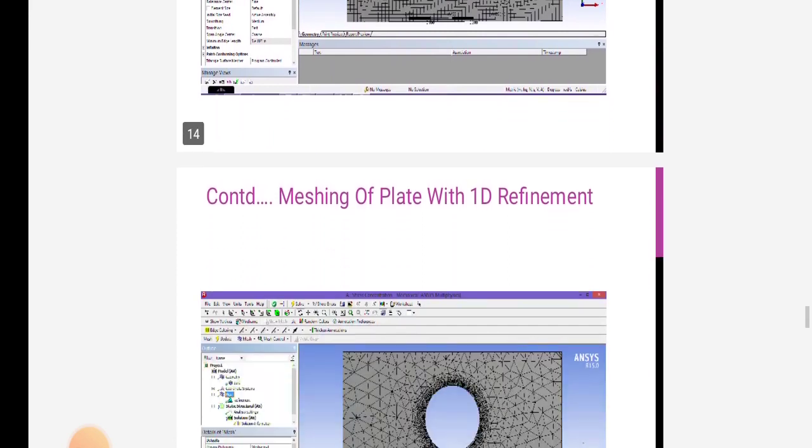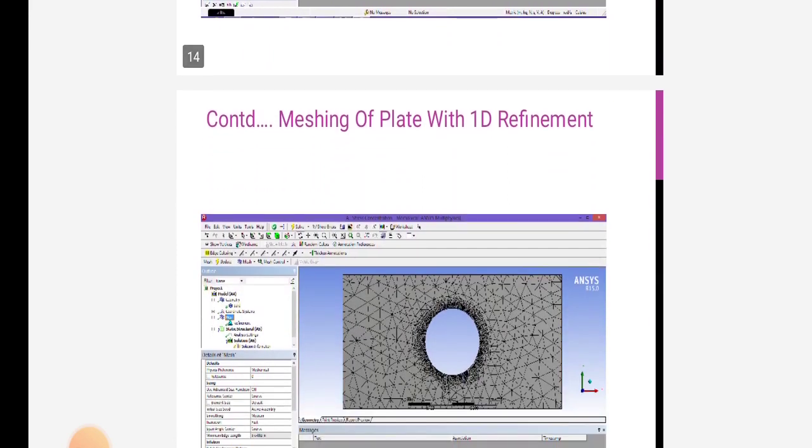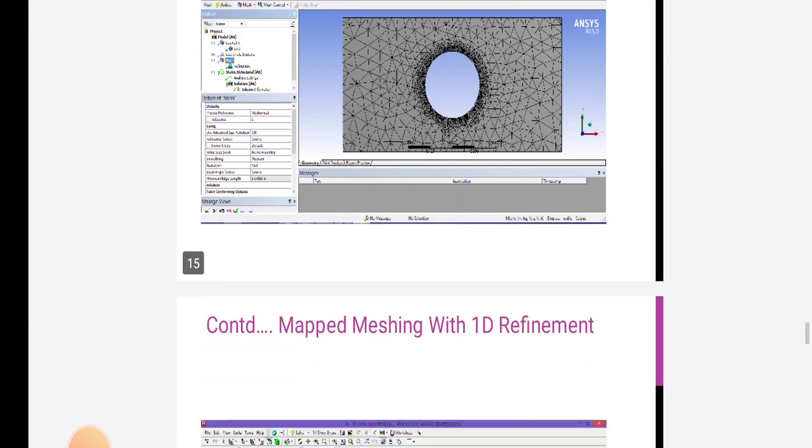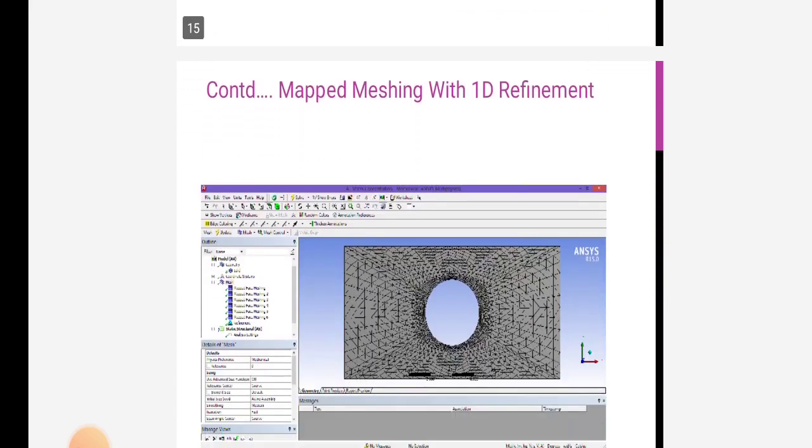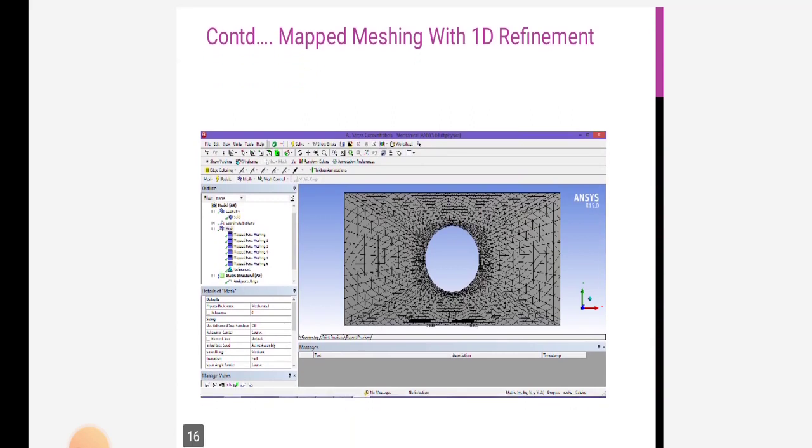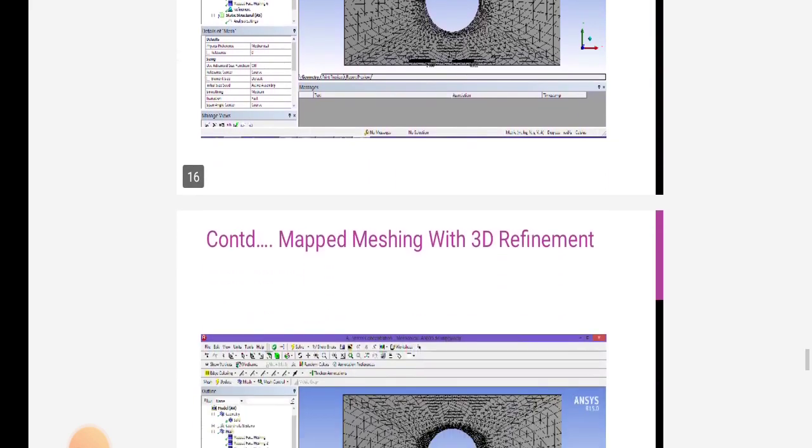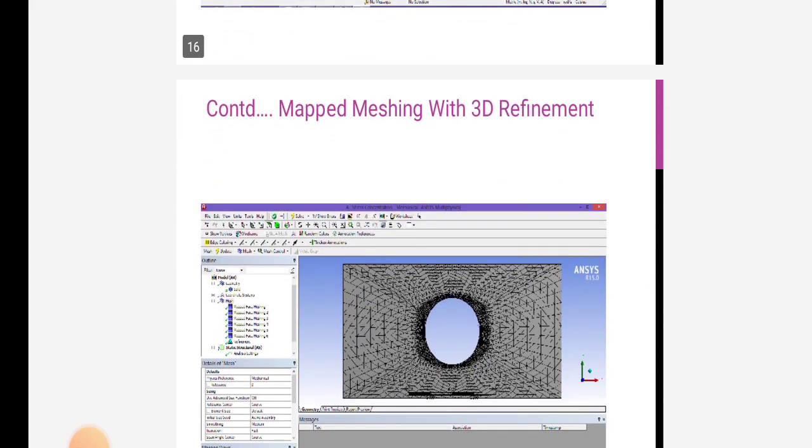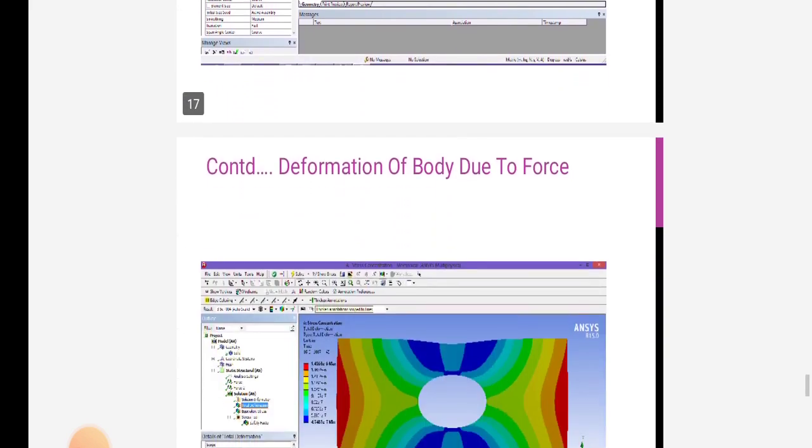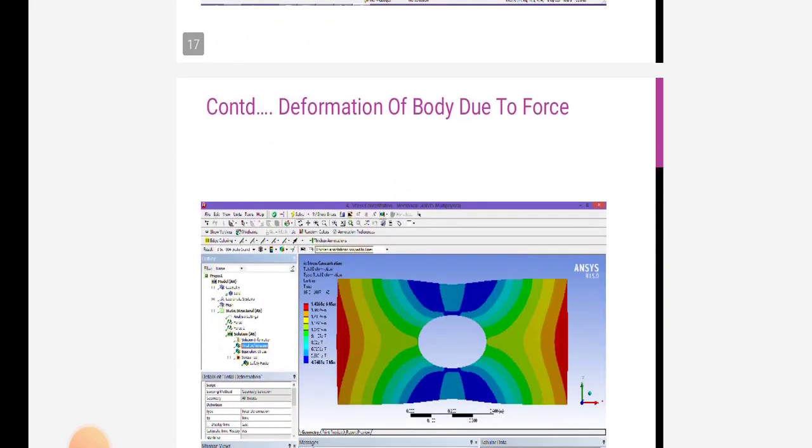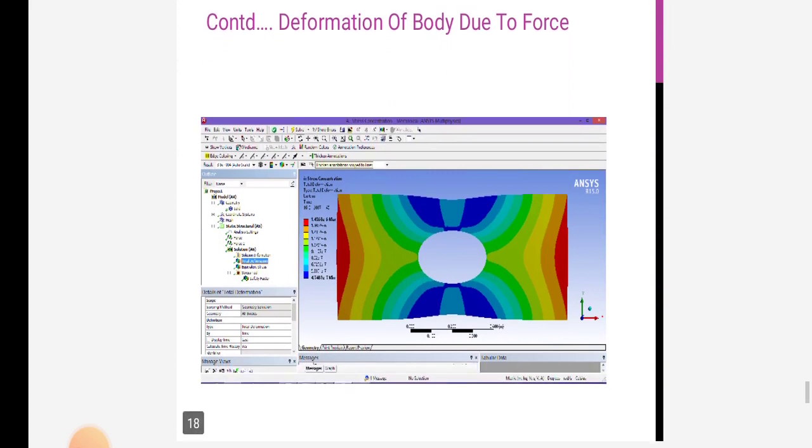In next steps, there is meshing of plate with 1D refinement, then map meshing with 1D refinement, then map meshing with 3D refinement. In next steps, deformation of body due to force.